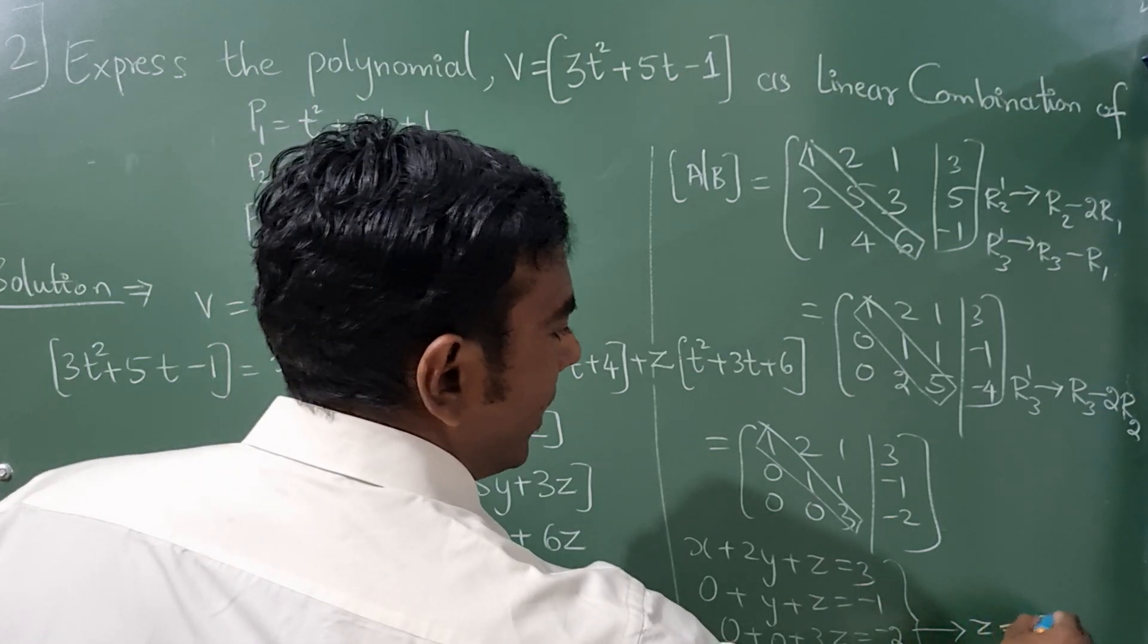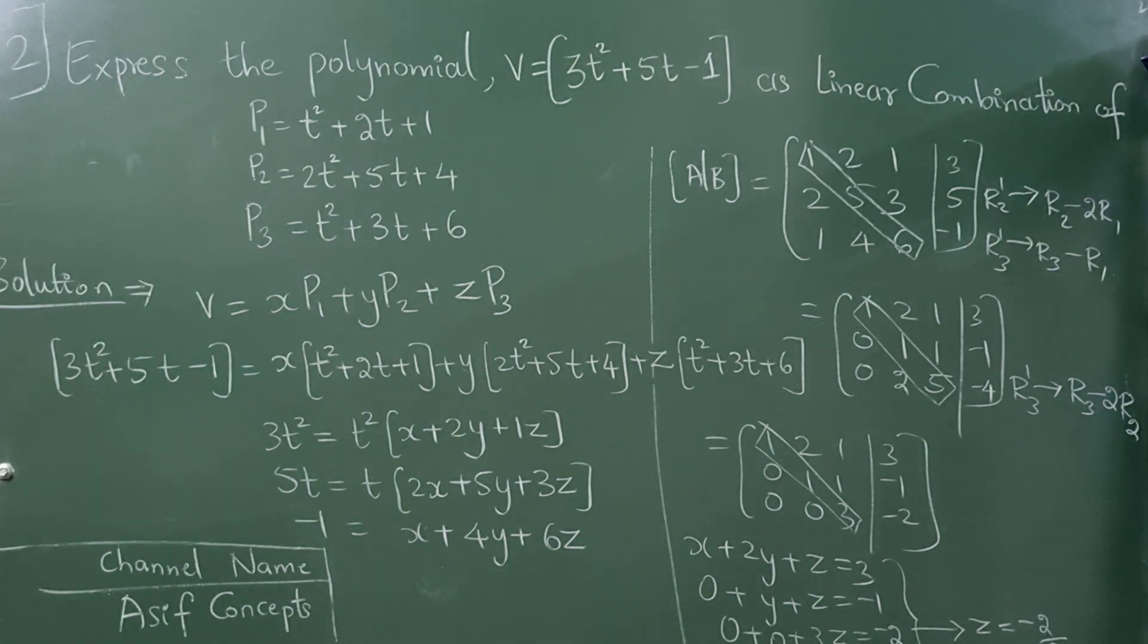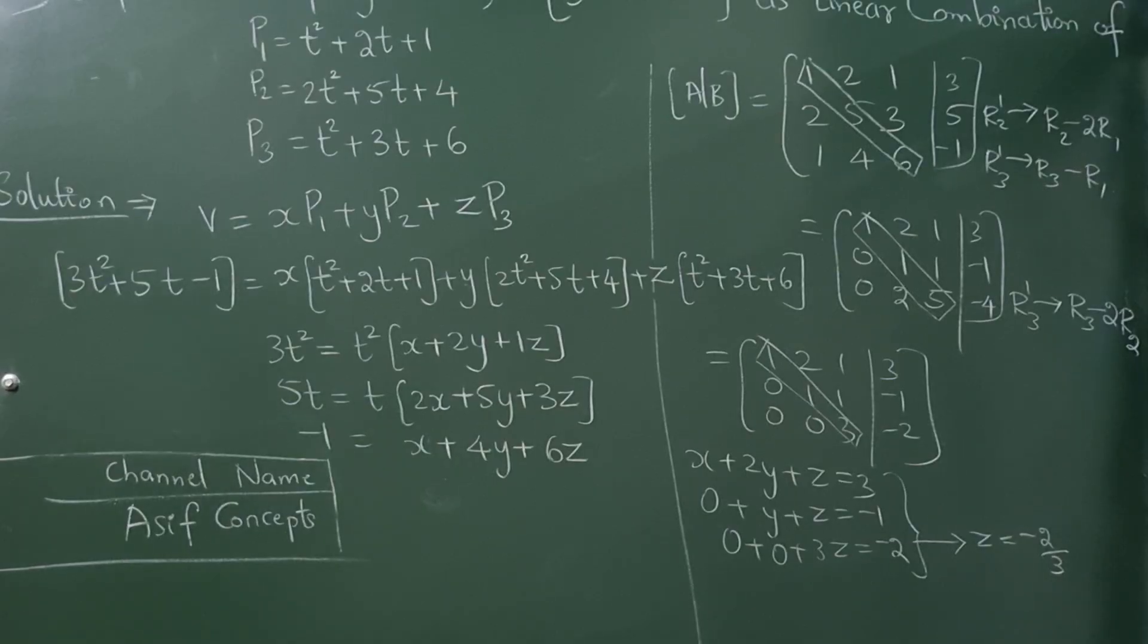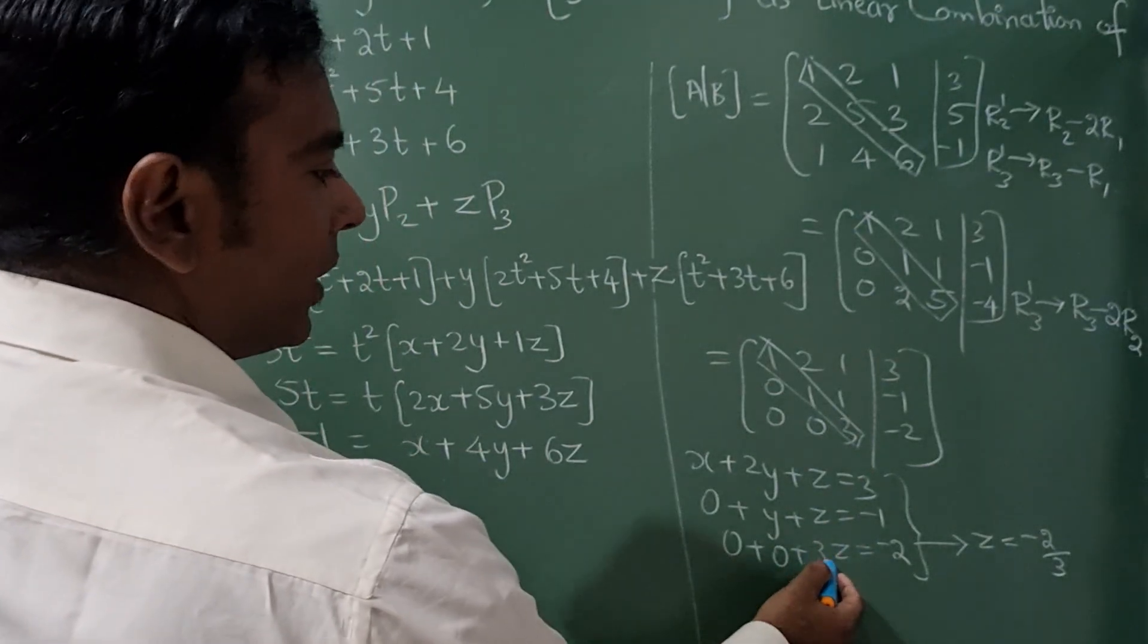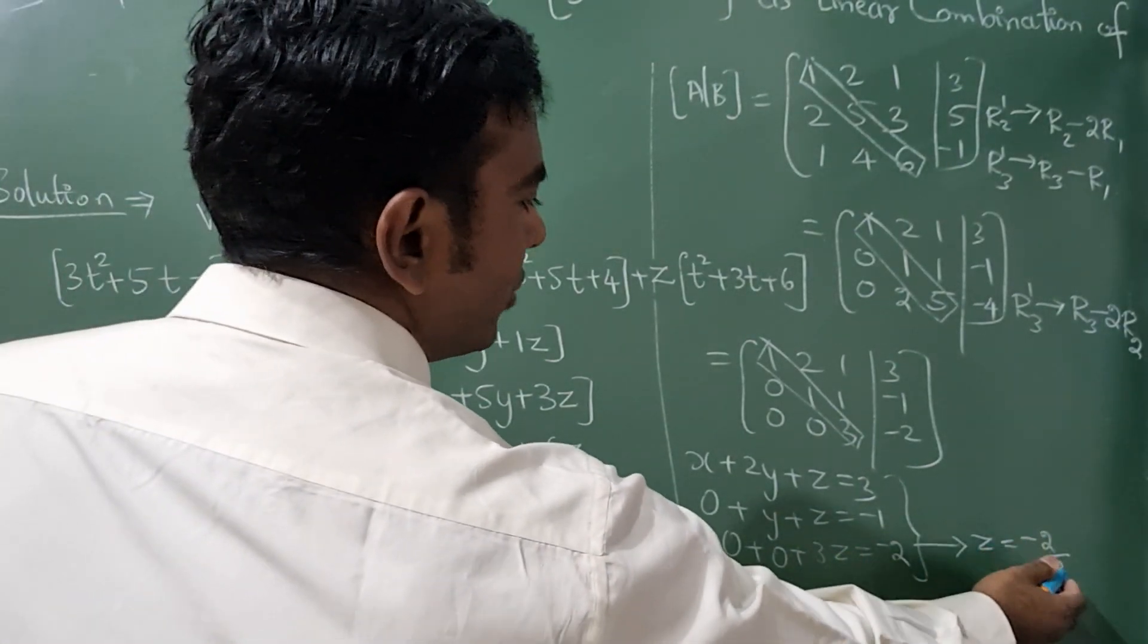Z value will become -2/3. This 3 goes to the denominator. From here, 3z = -2, z = -2/3.